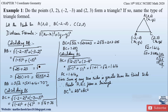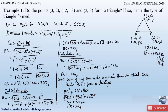BC² = (√52)² = 52. AB² + AC² = (√50)² + (√2)² = 50 + 2 = 52. Since 52 = 52, the condition is satisfied. Therefore, triangle ABC is a right-angle triangle.